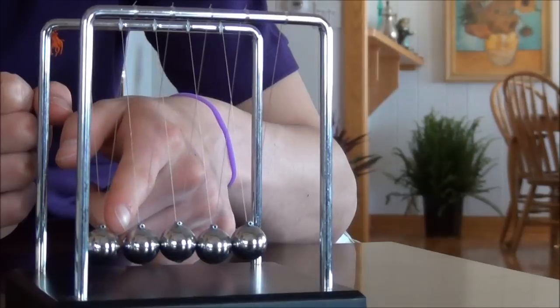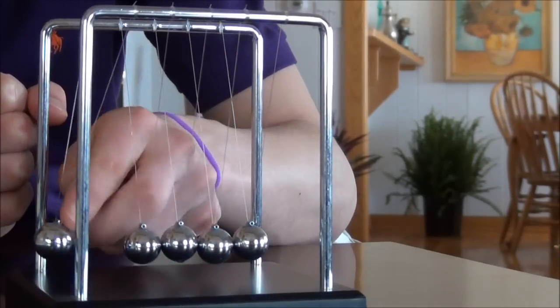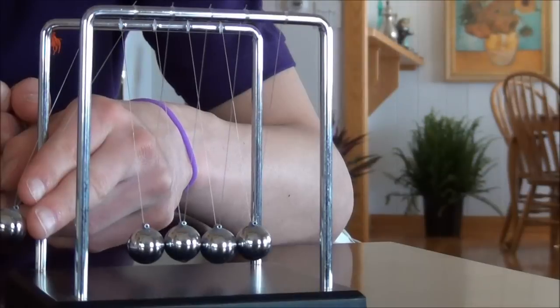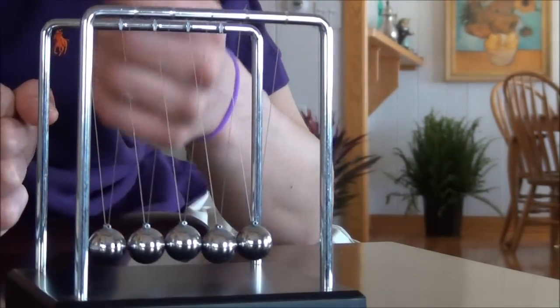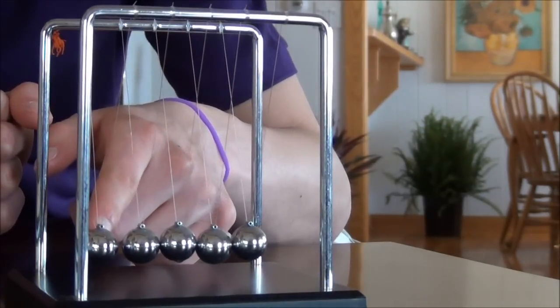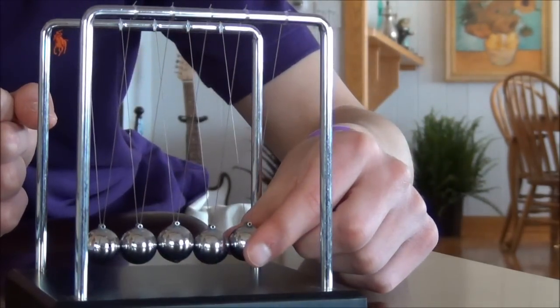where that energy, which has been conserved throughout the series of collisions, then has nothing to collide with. So that kinetic energy, once again, gets converted into potential energy as this ball gains height, and then it falls back down again, and we have another series of collisions, which converts the energy in this steel ball then back once again to this steel ball.